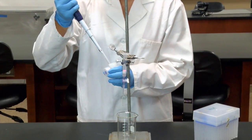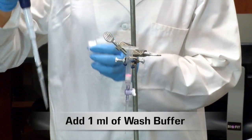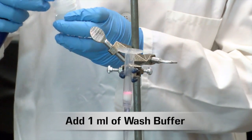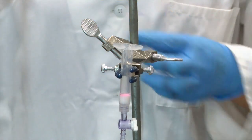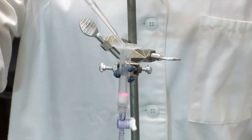The next step is to add 1 mL of wash buffer, which is a moderate salt concentration. Proteins that are moderately hydrophobic will be released from the beads and flow through the column.